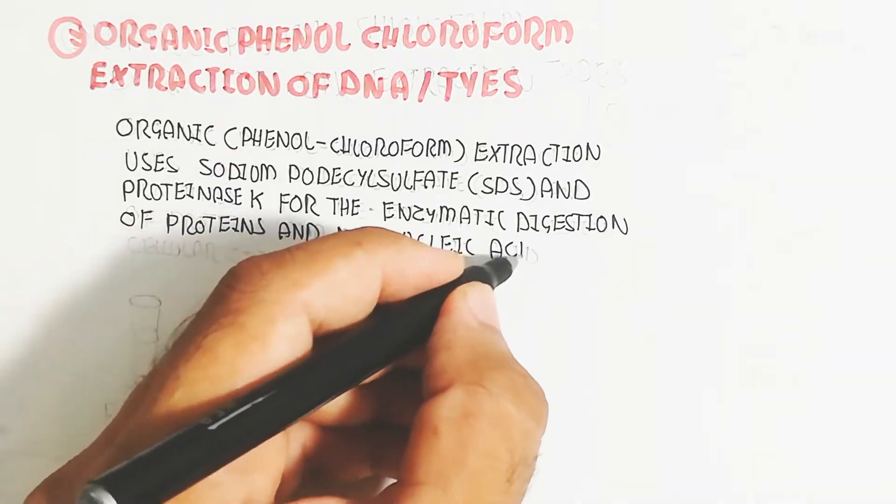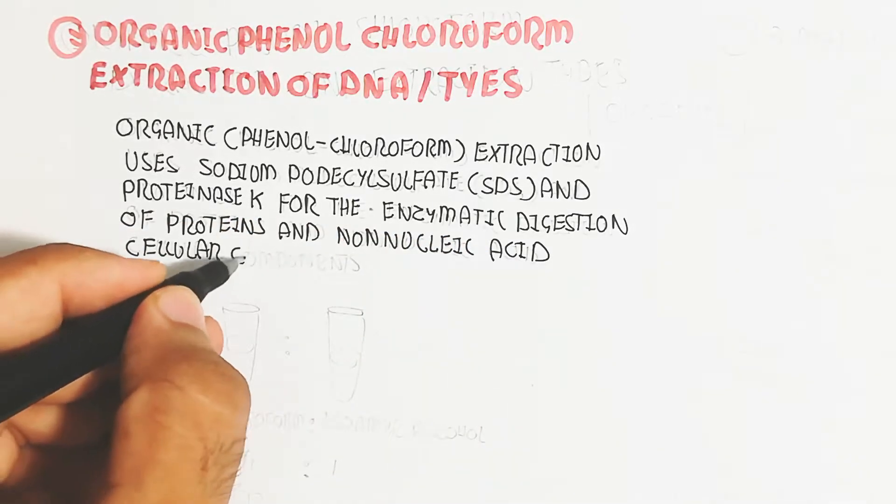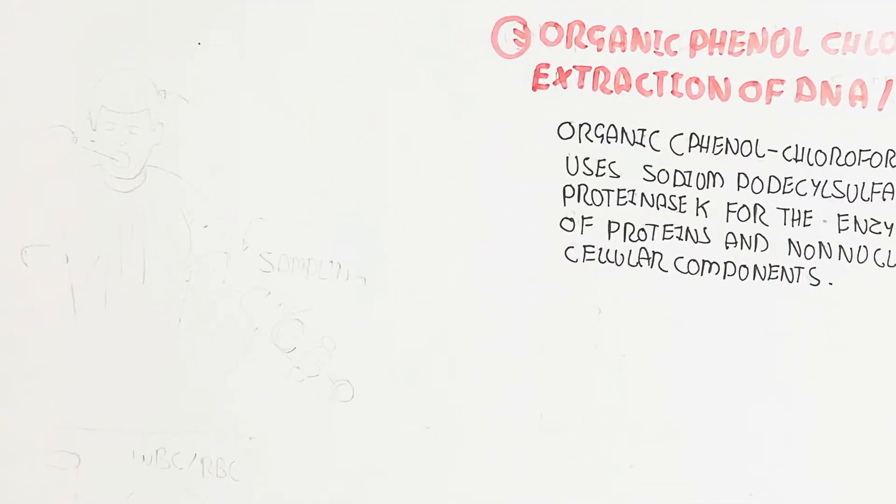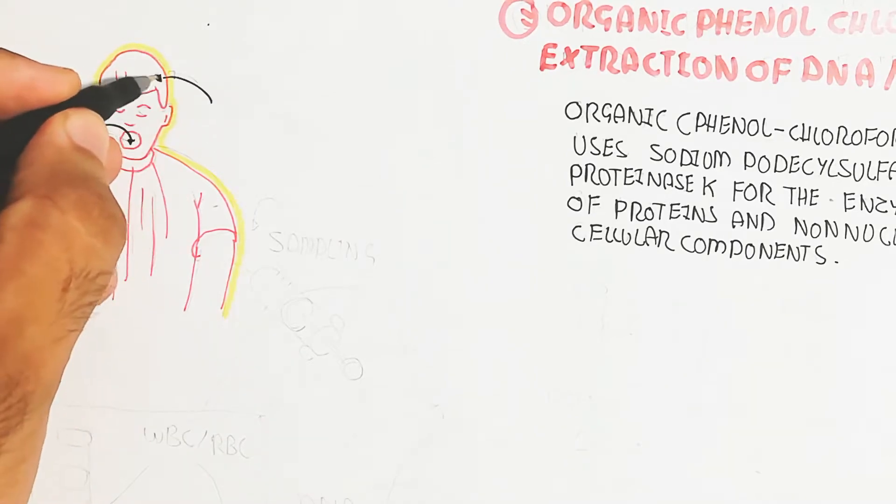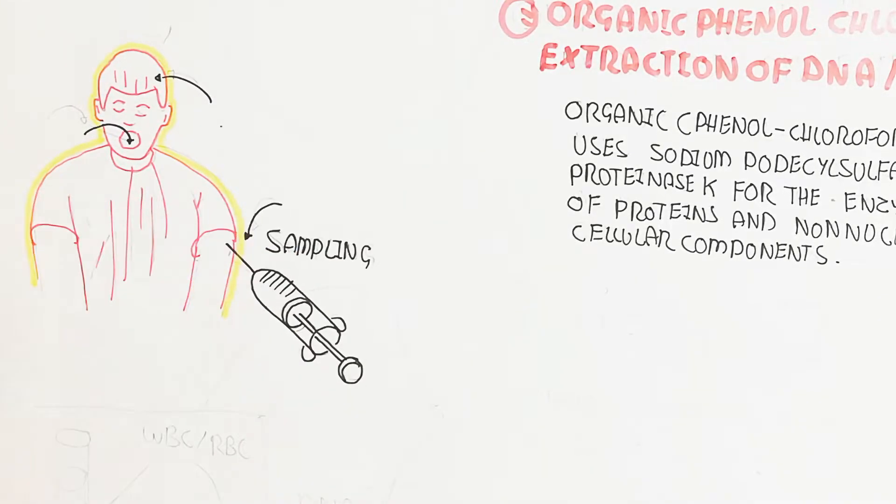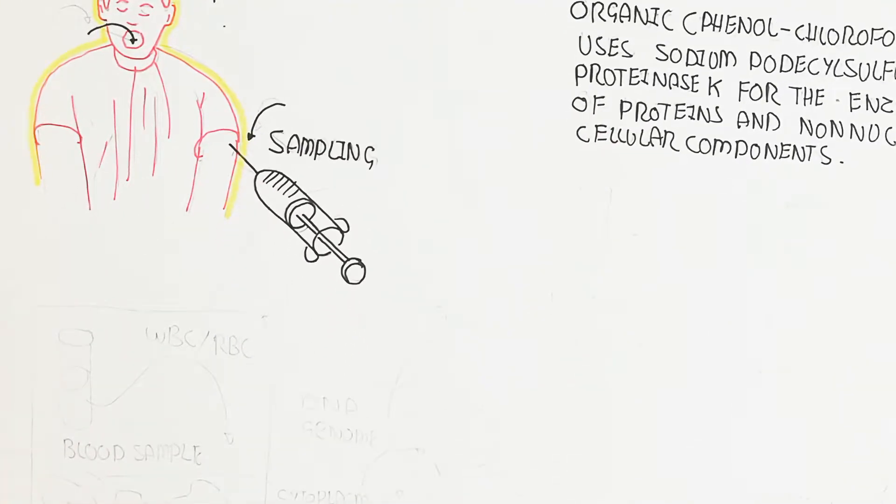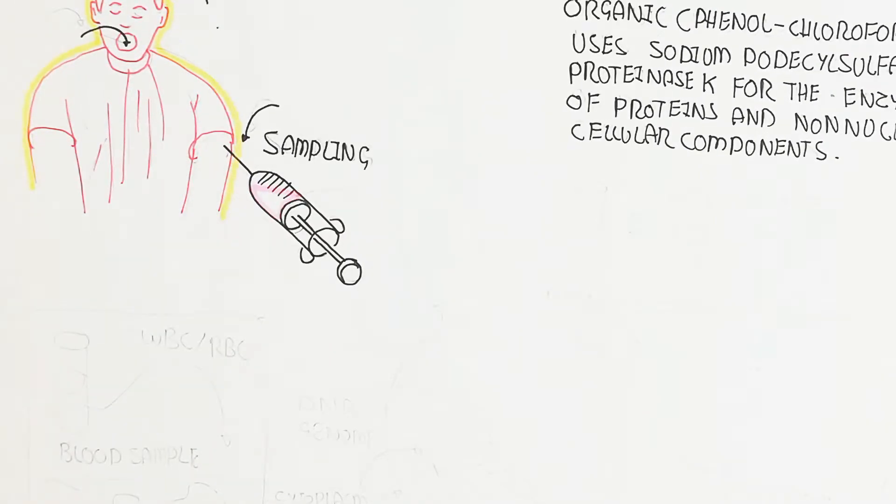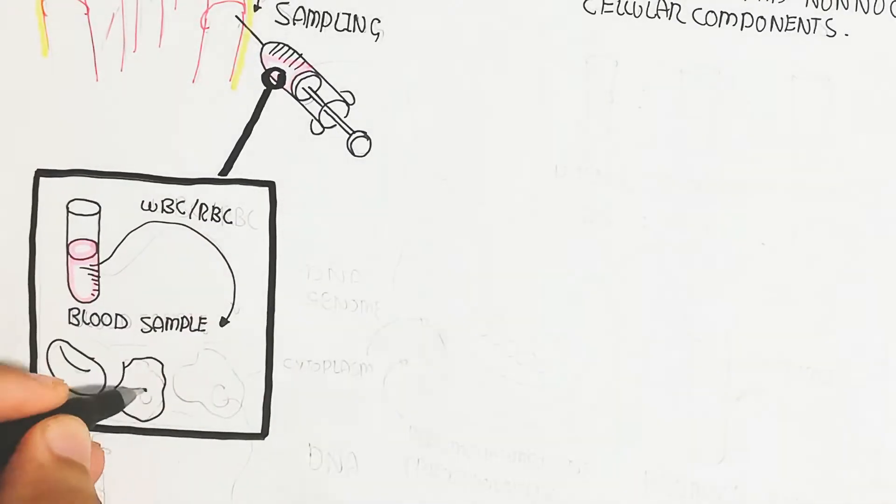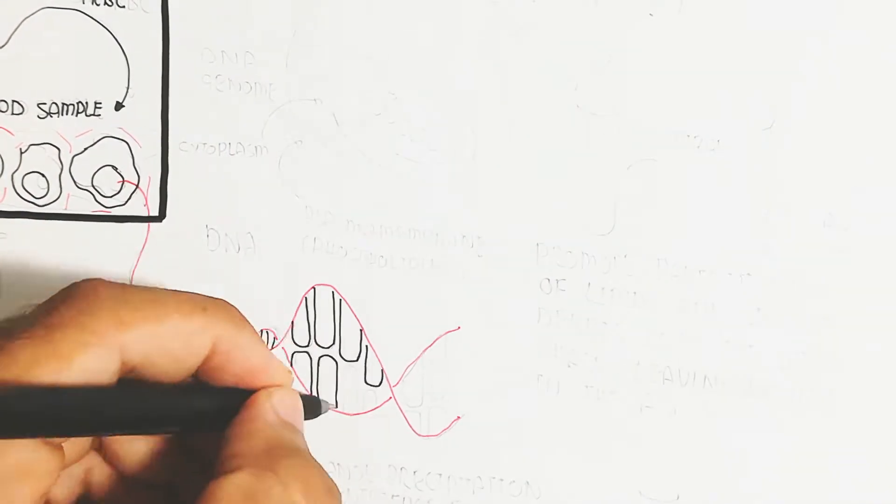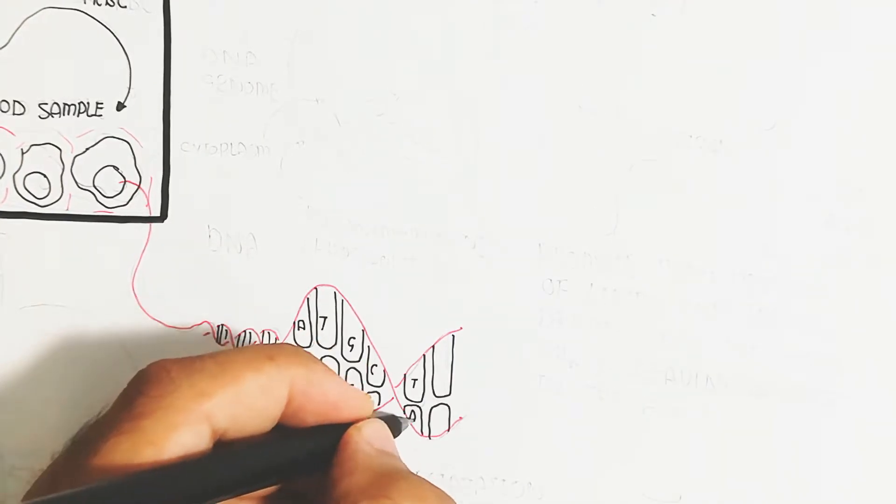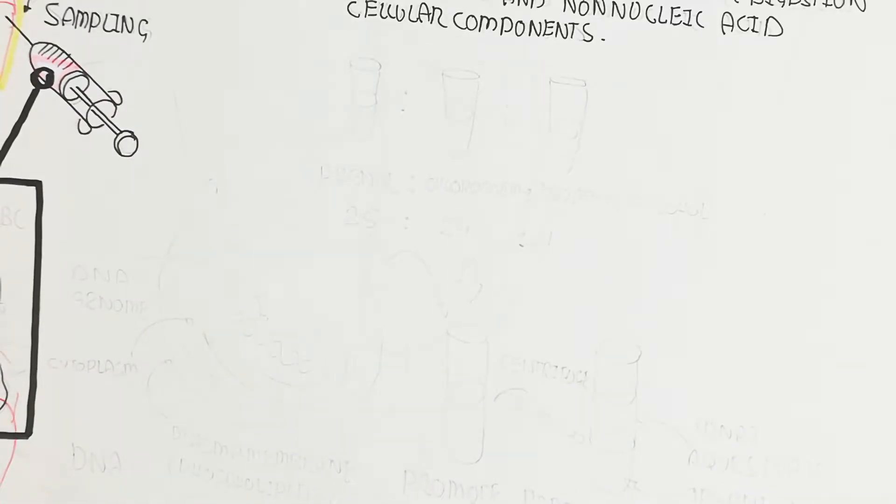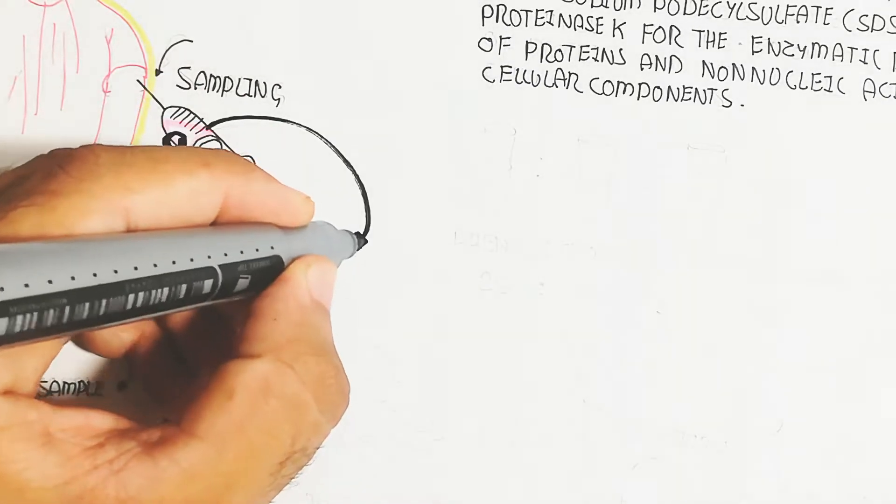Let's begin by understanding how to get the sample from the mouth saliva or blood sampling. Blood sampling contains RBC and WBC. RBC obviously does not contain DNA, but the WBC contains DNA with adenine, thymine, cytosine, and guanine double helix.